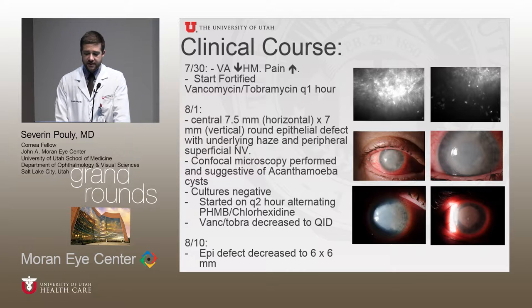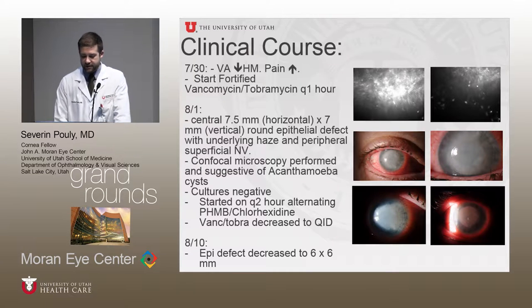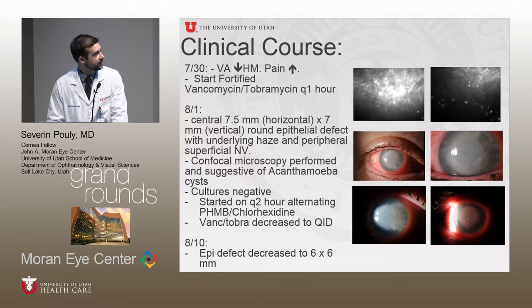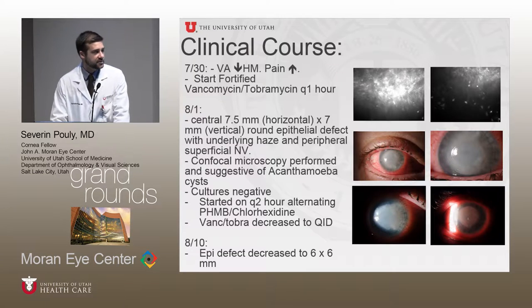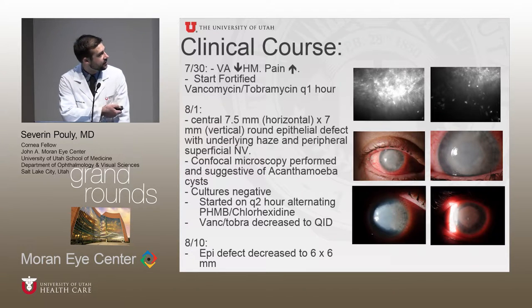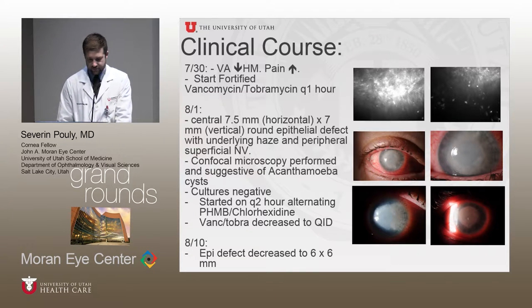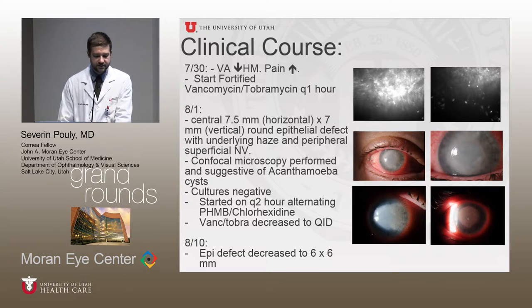She came back a couple days later with a 7.5 by 7 millimeter central epithelial defect that was round with peripheral haze. You can see the pictures showing her exam with diffuse haze and an epithelial defect. She had peripheral neovascularization coming in from the limbus.